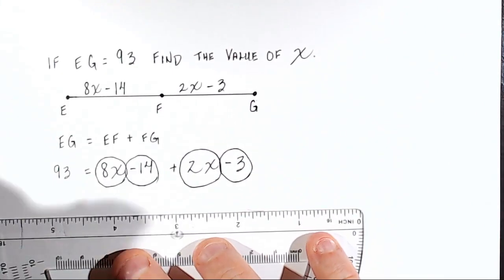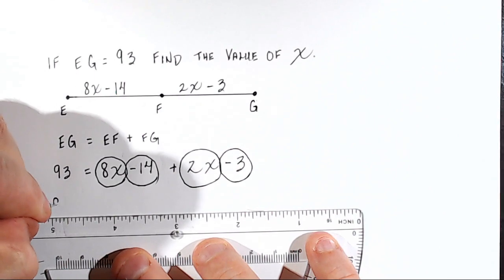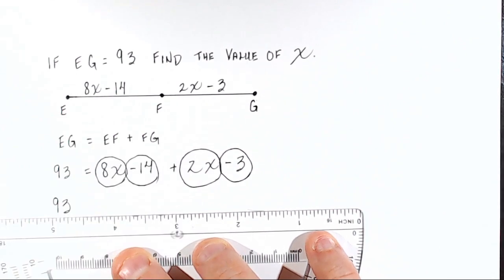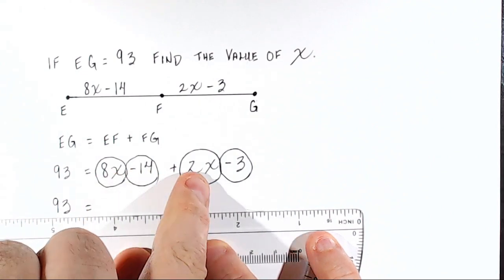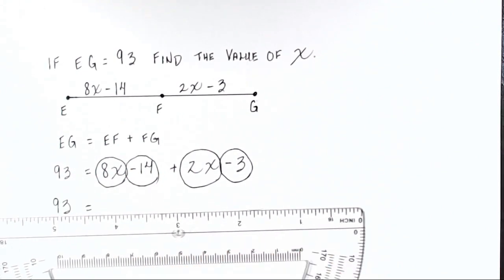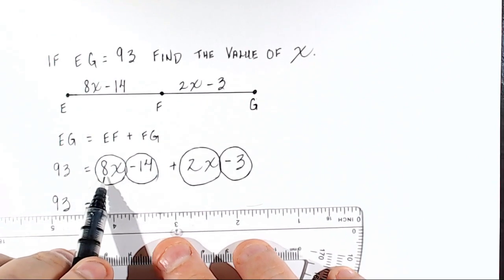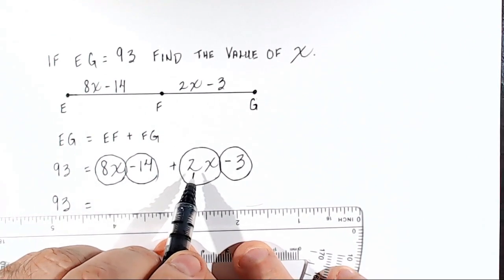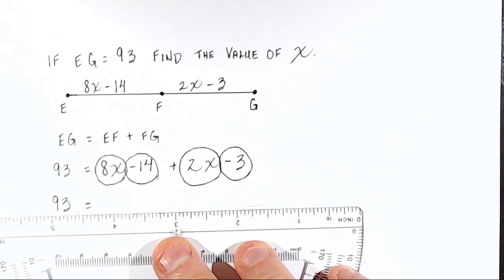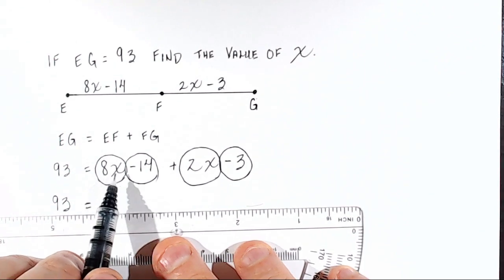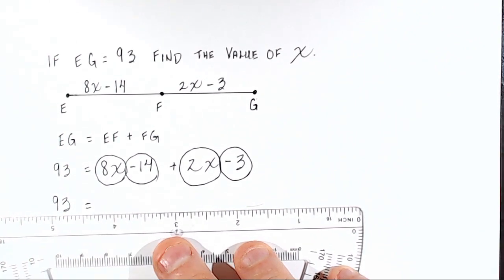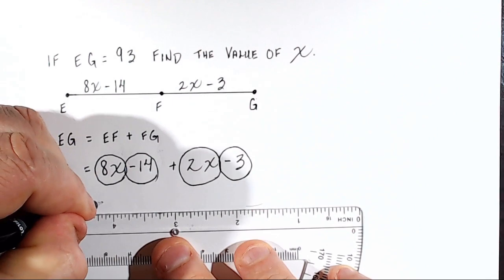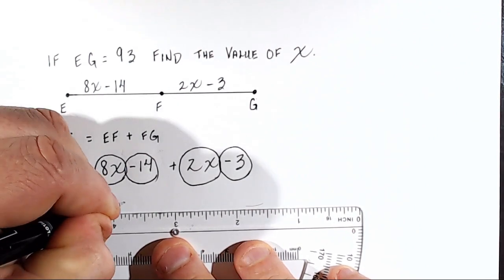We have 8X, and that has a common term with 2X. So we'll combine 8X and 2X, and then we have negative 14, and we're going to combine that with negative 3. All right, so first we'll do the X's. So we rewrite what we have on the left side, 93, is equal to 8X plus 2X. So you add the coefficient 8 to the coefficient 2, and you get 10. So you write 8X plus 2X is 10X.